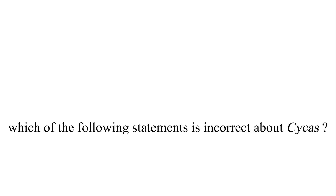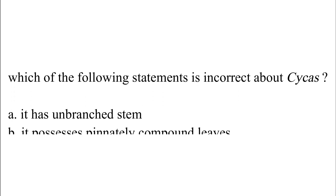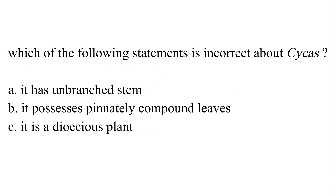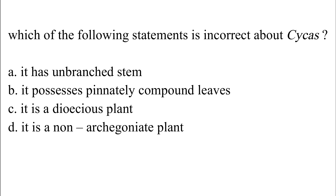Which of the following statements is incorrect about Cycas? Option A: It has an unbranched stem. Option B: It possesses pinnately compound leaves. Option C: It is a dioecious plant. Option D: It is a non-archegonate plant. The correct answer is Option D, which is: it is a non-archegonate plant.